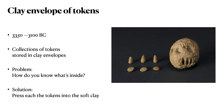Over the time period 3350 to 3100 BC, a new development occurred: specifically, using clay containers called envelopes to store collections of tokens. The tokens collected together could be stored inside this clay container called an envelope. But then a problem arose — what if you need to know how many and what types of tokens are inside the envelope? The only obvious way to do this was to break the envelope open and see what's inside.